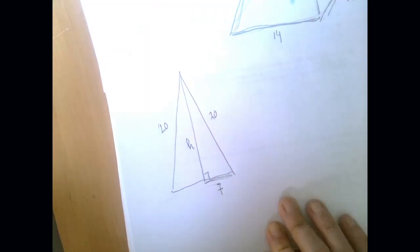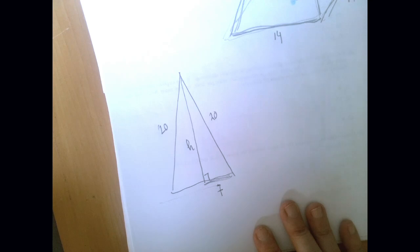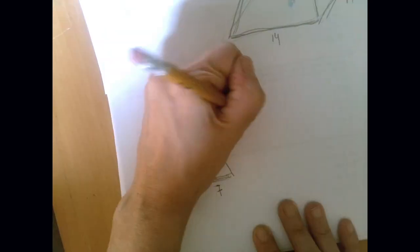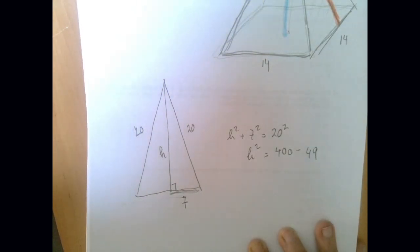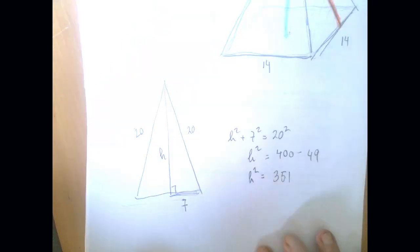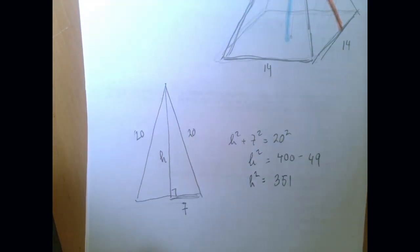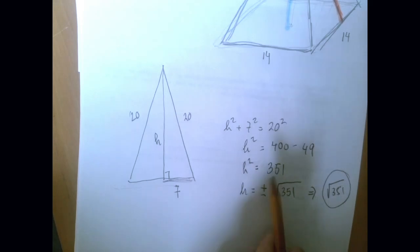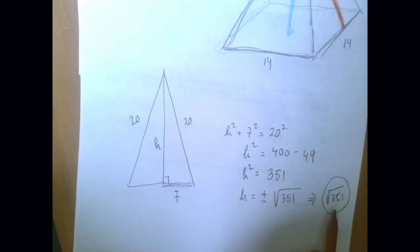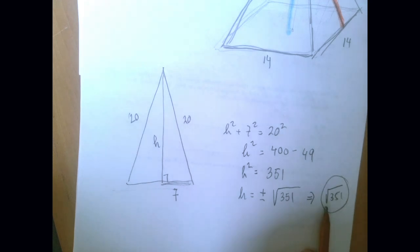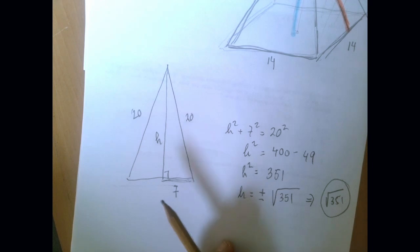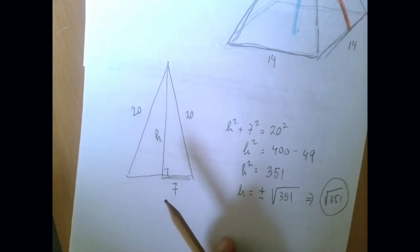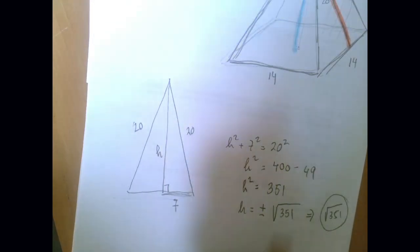I'm going to call this little h. We can state the Pythagorean theorem. Be careful, because h is not the hypotenuse — the hypotenuse is the side opposite the right angle, which is 20. So h squared plus 7 squared equals 20 squared. So h squared is 400 minus 49, which is 351. The slant height is the square root of 351. Unless this is a perfect square, don't worry about simplifying it or rewriting it as a decimal, because in the next step we're going to square it back to 351 again.